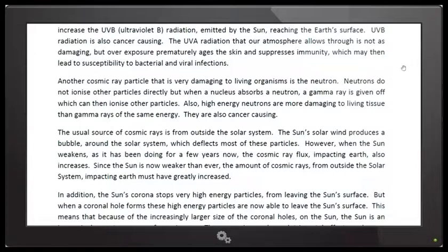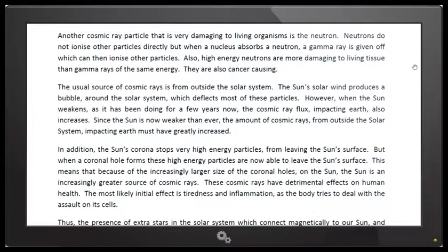The usual source of cosmic rays is from outside of the solar system. The sun's solar wind produces a bubble around the solar system which deflects most of these particles. However, when the sun weakens, as it has been doing for a number of years, the cosmic ray flux impacting earth also increases. Since the sun is now weaker than ever, the amount of cosmic rays from outside of the solar system impacting the earth must have greatly increased.